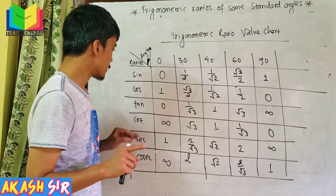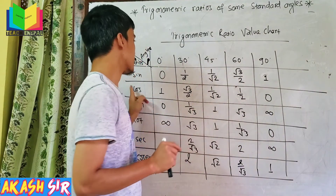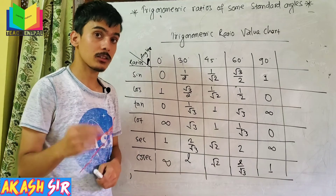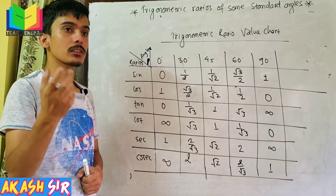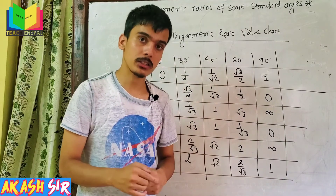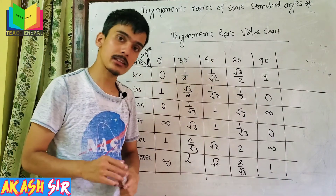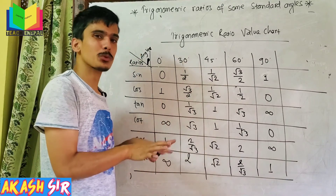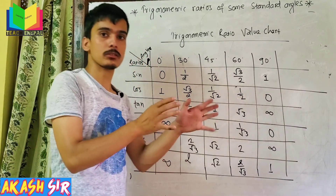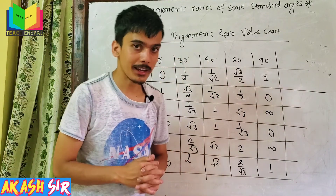Make sure that you have the calculator. You can check sin values for different angles using a calculator. Consider the standard angles from 0 to 90 degrees. I will check the standard angle values. Bye bye!